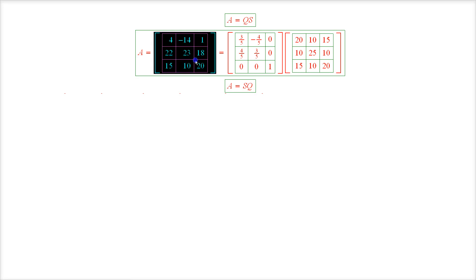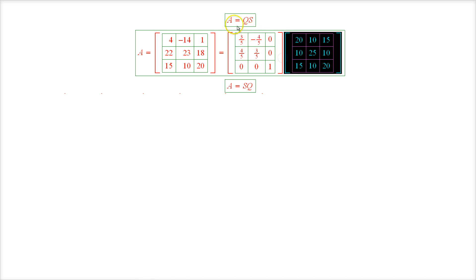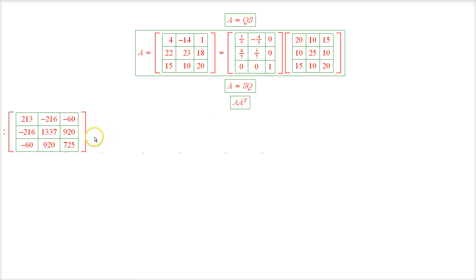Alright, we have previously decomposed this matrix A as the product of this orthogonal matrix Q and this symmetric matrix S. So now we have to go in the opposite order and represent the matrix A as a product of a symmetric matrix times an orthogonal matrix. So as we just discussed for that we need to consider the product A A transpose which equals this matrix.